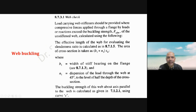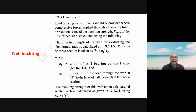For this, the cross-sectional area is taken as (b1 + n1) × tw, where b1 is the width of stiff bearing on the flange — we will see that in the next slide — and n1 is the dispersion of the load through the web at 45 degrees to the level of half the depth of the cross-section. The buckling strength of the web we have to find about an axis parallel to the axis of the web, and for this we have to use curve C to find the value of design strength.